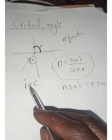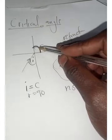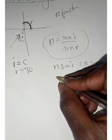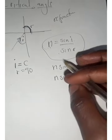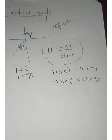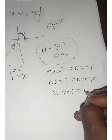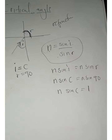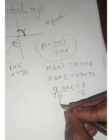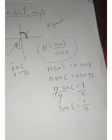Now we said i equals c and r equals 90 degrees. We want to come up with the formula for the angle of incidence, so n equals sine c over sine 90. Since sine 90 equals one, n times sine c equals one. Dividing both sides by n, the formula becomes: sine c equals one over n, where n is the refractive index.